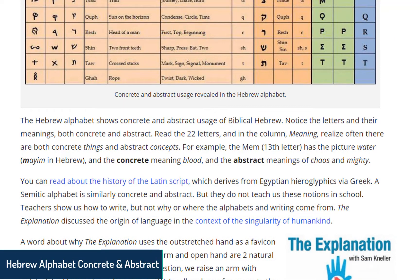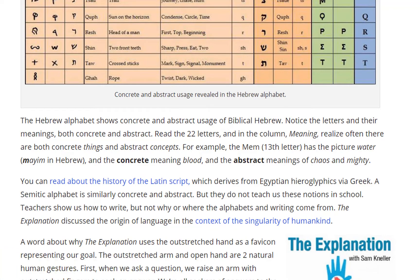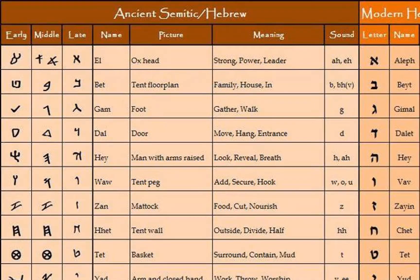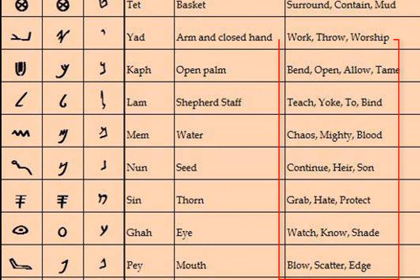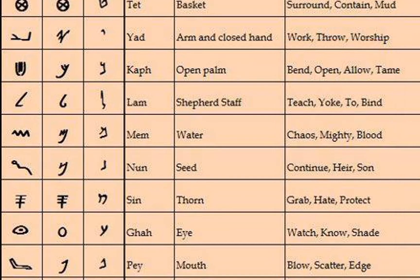The Hebrew alphabet shows concrete and abstract usage of Biblical Hebrew. Notice the letters and their meanings, both concrete and abstract. Read the 22 letters and in the column 'meaning,' realize there are often both concrete things and abstract concepts. For example, the Mem has the picture of water — mayim in Hebrew — a concrete meaning, blood, and the abstract meanings of chaos and mighty.